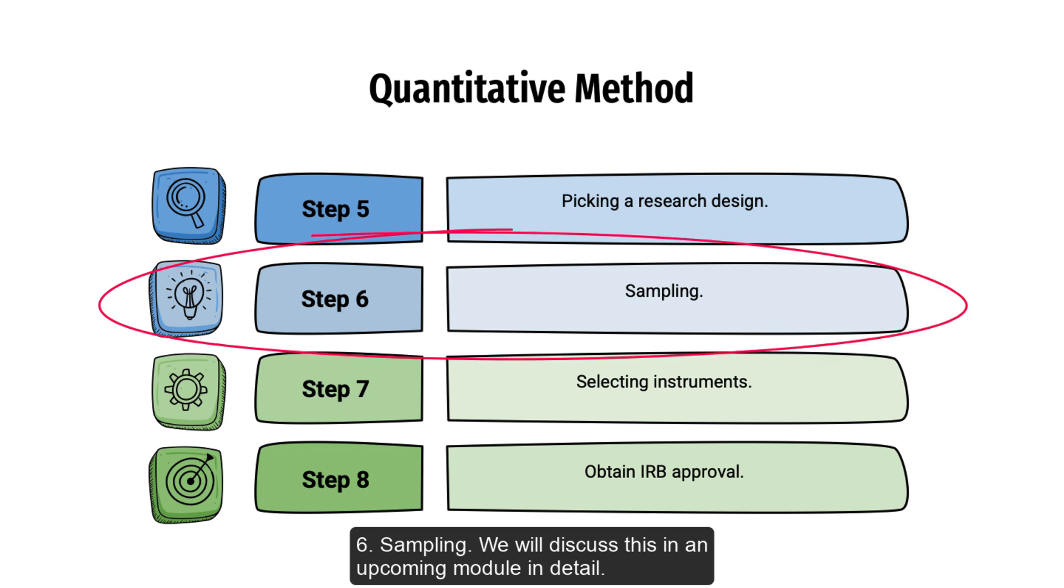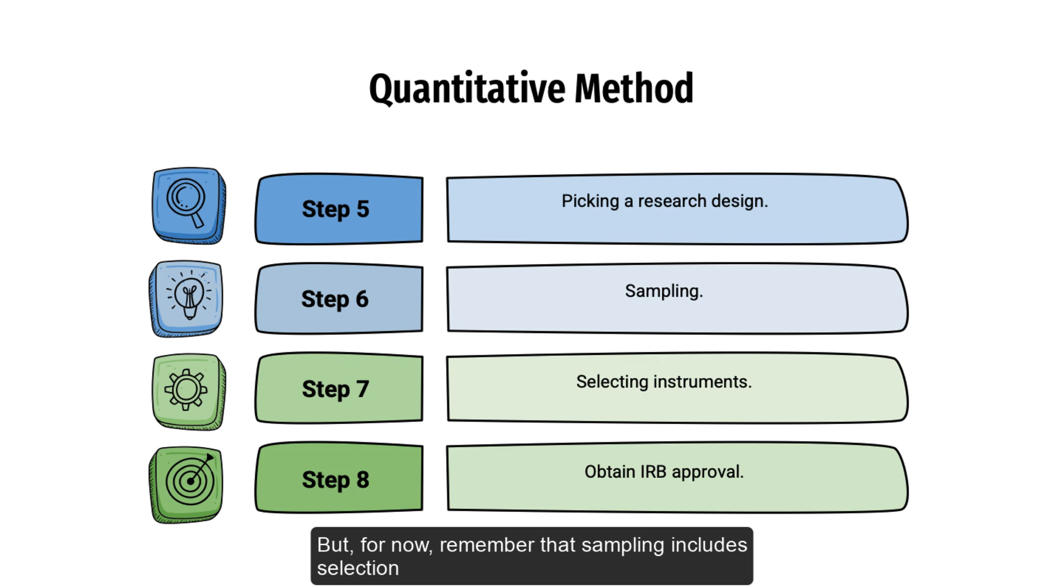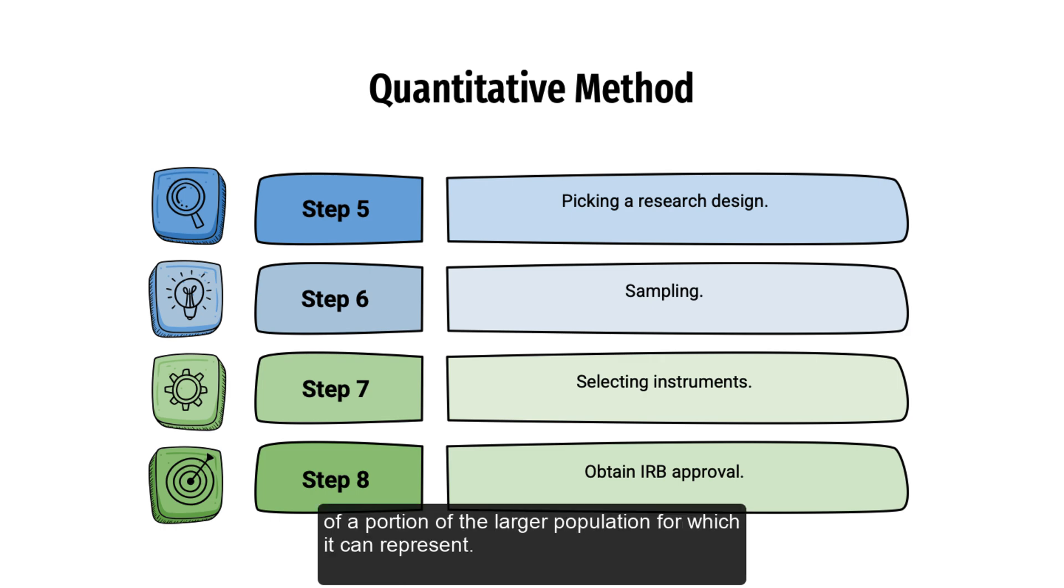Step 6: Sampling. We are going to discuss this in an upcoming module in detail, but for now, remember that sampling includes a selection of a portion of the larger population for which it can represent.